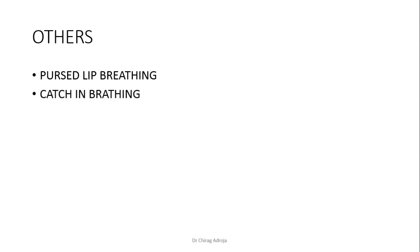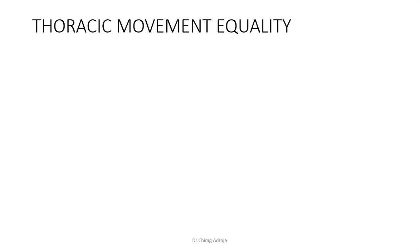Pursed-lip breathing is described in detail in our first part of video — seen in emphysema. Catching breathing (pleuritic catching): patient takes a deep inspiration, develops pain because of pleurisy or pneumonia, holds for some moment, then continues inspiration — seen in pleurisy or pneumonia. Cogwheel breathing is characterized by interrupted type of breathing, seen in nervous individuals.